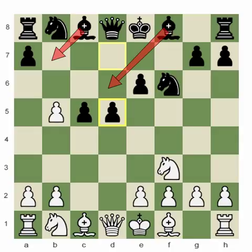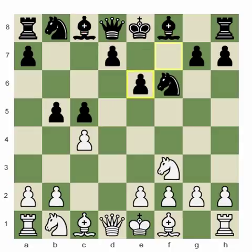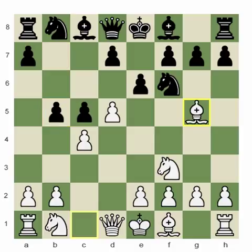Instead of accepting the gambit, it's very well motivated to decline in order to keep a positional edge. The computer is going to back us up on this decision. The critical move — the best way to decline — is to play bishop to g5.